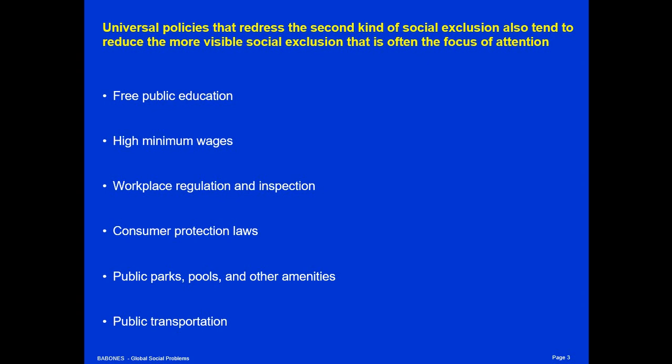Higher minimum wages, workplace regulation, consumer protection — consumer protection in the United States, for example, is often focused on protecting targeted minority groups like African Americans, yet everybody benefits from better consumer protection laws. Public parks make it possible for everybody to learn to play golf, everybody to learn to swim — to be part of the activities undertaken by richer people in society. And perhaps greatest of all, public transportation in many cities and countries: people who have resources are able to get places, while people who don't have resources can't, or can only do so with much difficulty. Free, efficient, high-volume, high-frequency public transportation is one of the great levelers of society.